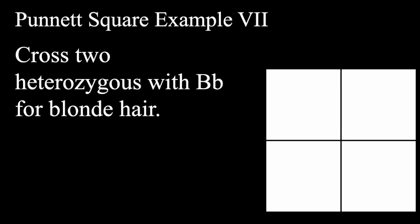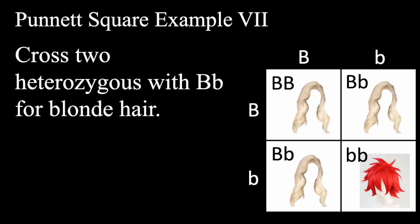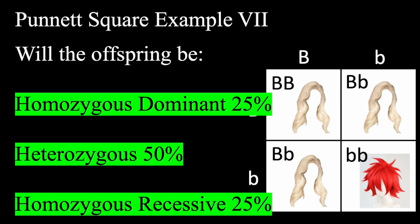Now we know the dominant allele represents blonde hair and the recessive allele represents red hair. So we're going to cross two heterozygous parents — capital B lowercase b — both parents being the same. The upper left quadrant results in homozygous dominant. The upper right and bottom left quadrants result in heterozygous. The bottom right quadrant could possibly result in red hair. In regards to phenotype, there's a 75% chance of blonde and a 25% chance of red hair. In regards to genotype, we have 25% homozygous dominant, 50% heterozygous, and 25% homozygous recessive.